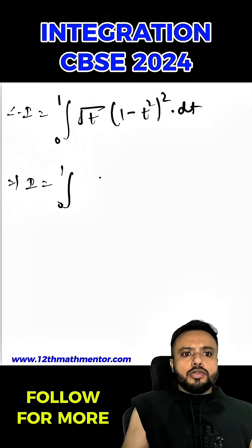Which can be written as i equal to 0 to 1 root t into 1 minus 2t square plus t raised to the power 4 into dt. So here I have used the a minus b whole square formula.